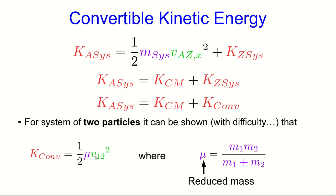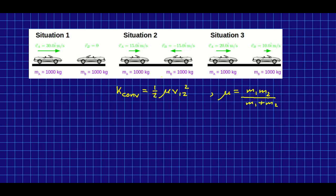and the relative speed of the two particles is something that all observers agree on no matter what reference frame they're in. So now we can return to our three situations with the cars and see how we could have got our answer very easily using these expressions.